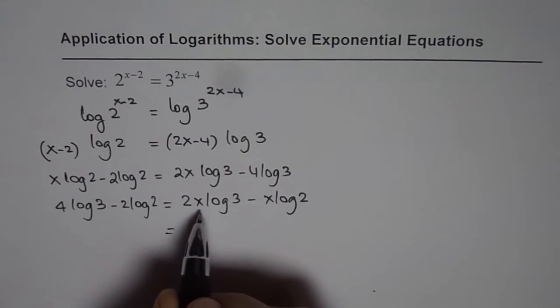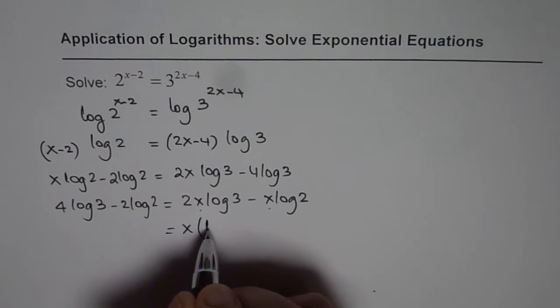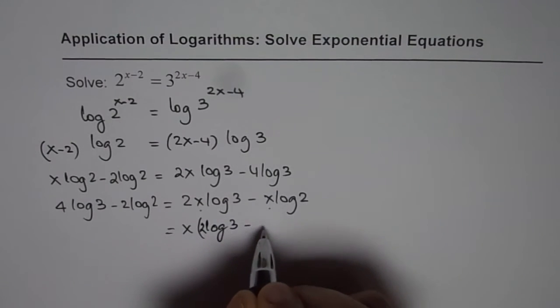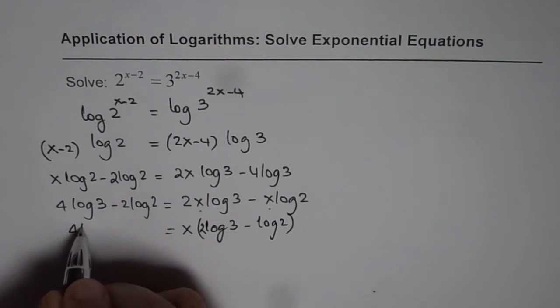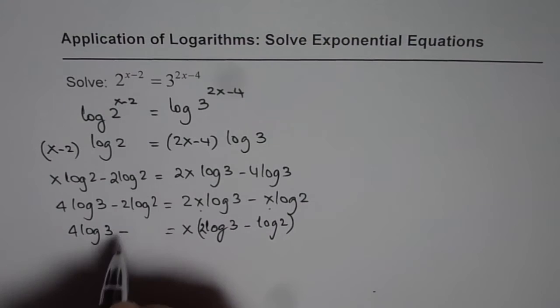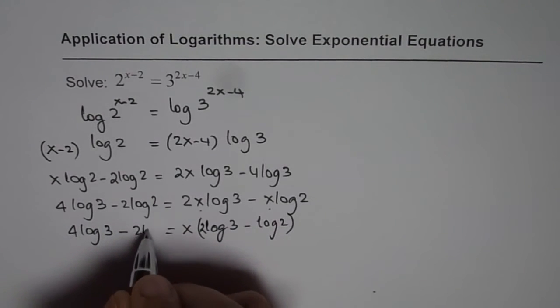Now on the right side we can take the x common. So we have x times 2 log 3 minus log 2. And on the left side we have 4 log 3 minus 2 log 2.